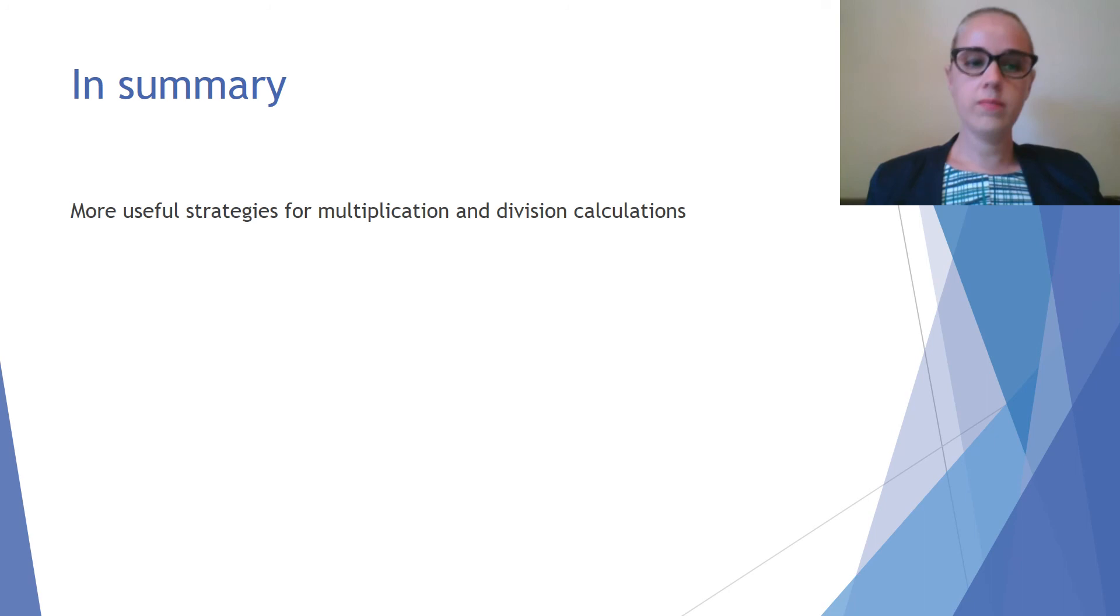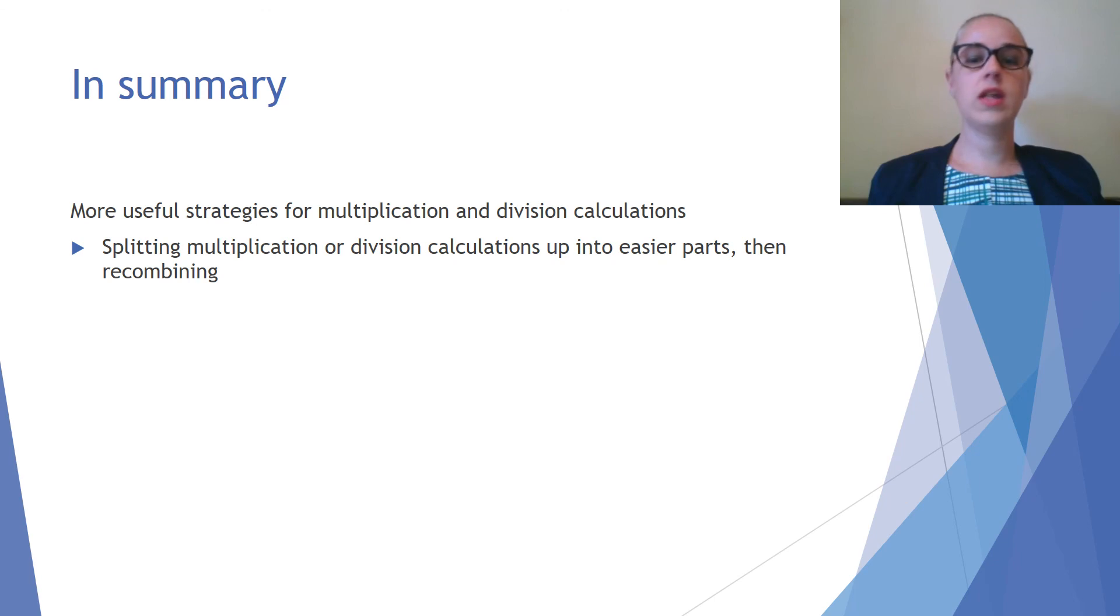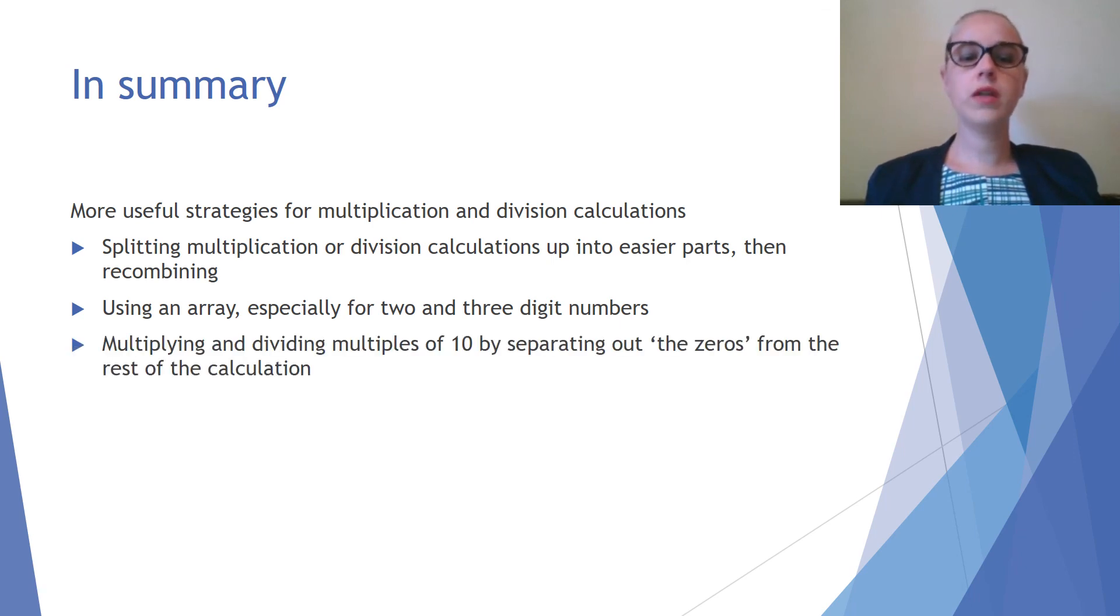In summary, here are some more useful strategies for multiplication and division calculations. Sometimes you can try splitting multiplication or division calculations up into easier parts, then recombining them. It can be helpful to use an array, especially for two and three digit numbers. And multiplying and dividing multiples of 10 by separating out the zeros or multiples of 10 bit from the rest of the calculation.